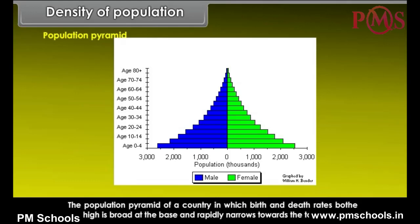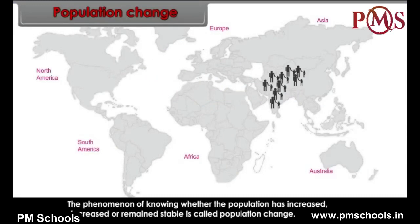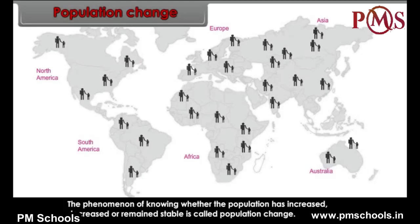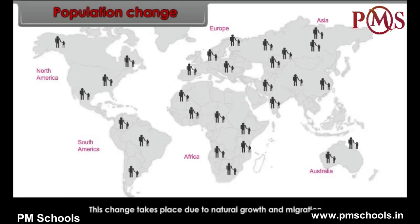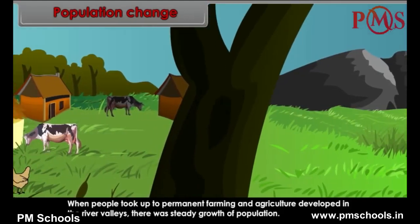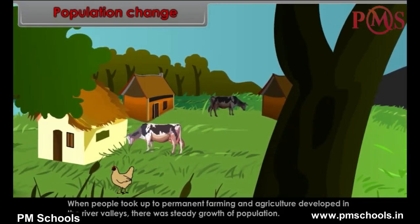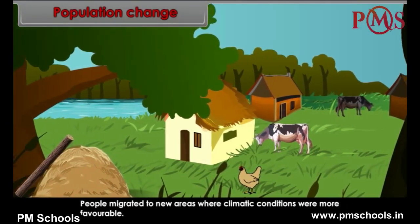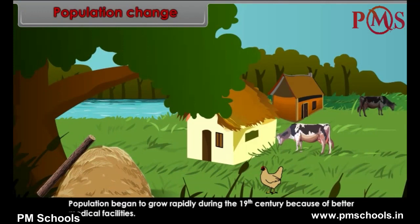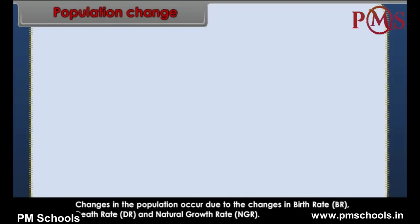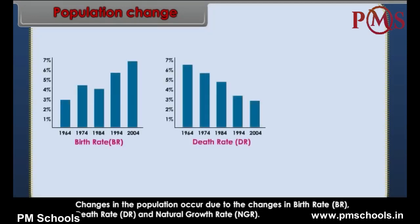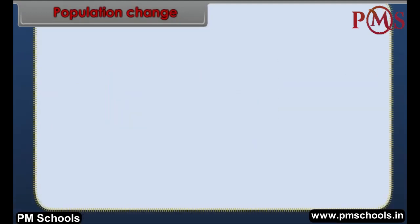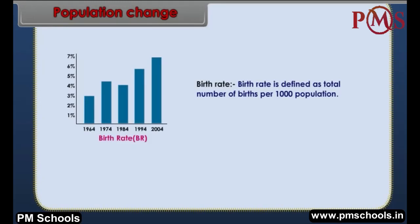The population pyramid of a country in which both birth and death rates are high is broad at the base and rapidly narrows towards the top. Population change refers to whether the population increased, decreased or remained stable, occurring due to natural growth and migration. When people took up permanent farming and agriculture developed in river valleys, there was steady population growth. Population began to grow rapidly during the 19th century because of better medical facilities.